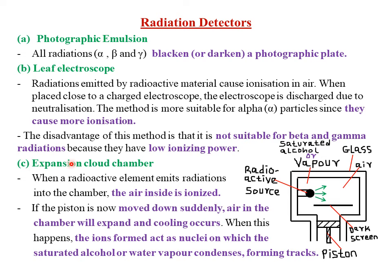The third type of radiation detector is what we call the expansion cloud chamber. It has a radioactive source which produces the alpha, beta, and gamma rays. It also contains saturated alcohol or water vapor placed within the chamber, as well as a glass and a dark screen where the formed tracks will be displayed. Then we have a piston.